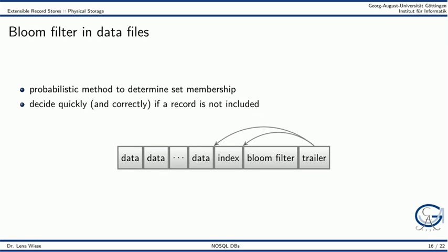For a more efficient data access, a bloom filter can be maintained in the data files. A bloom filter is a probabilistic method to determine set membership. With a bloom filter, we can quickly decide if a record is not included and this decision will also be correct.